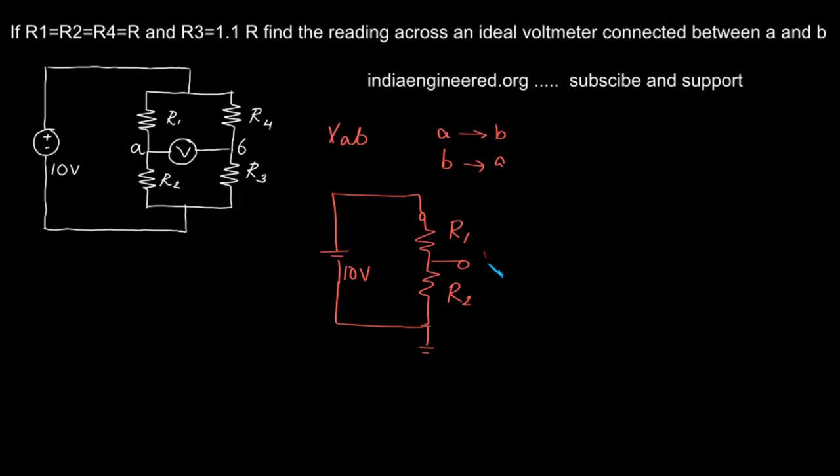Because this combination is in parallel and no current flows in this direction, 10 volts appears across R1 and R2. We can find out what is the voltage VA. Since R1 equals R and R2 equals R, VA is nothing but 10/2, that is 5 volts.